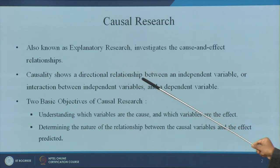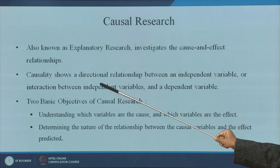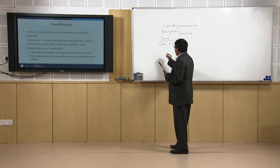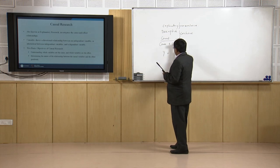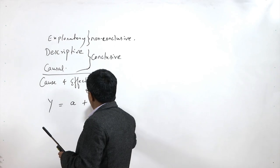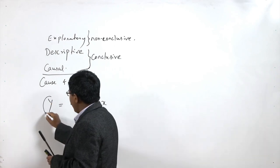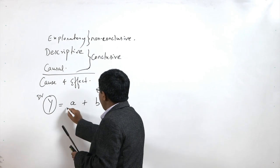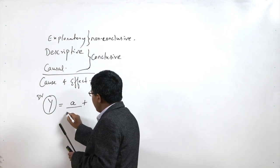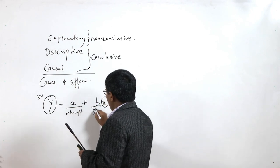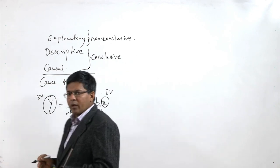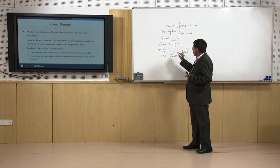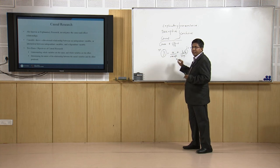It is a directional relationship between an independent variable — or interaction between independent variables — and a dependent variable. The basic equation of regression is y = a + bx, where y is our dependent variable, x is our independent variable, a is our constant or intercept, and b is our slope. How much change happens in y due to a change in x — that is what we do in a cause and effect study.